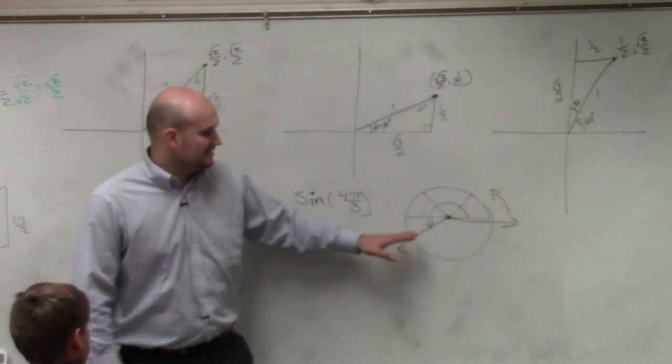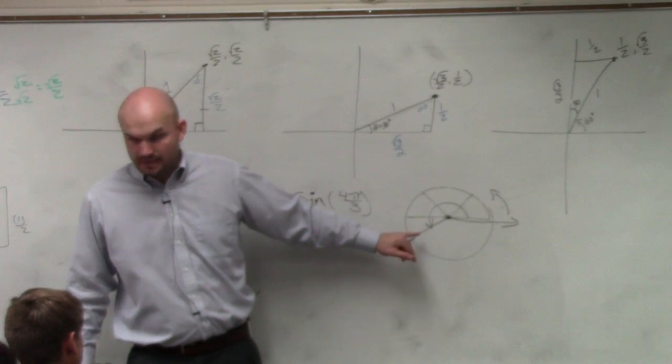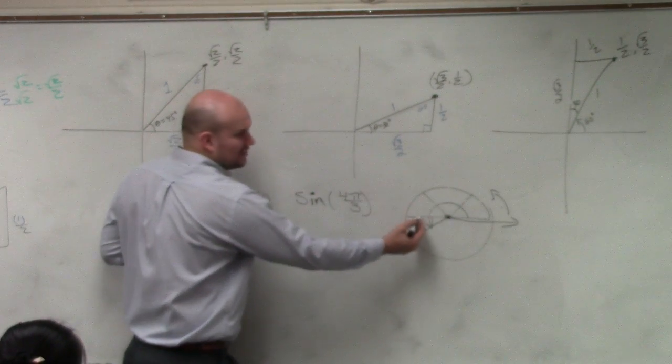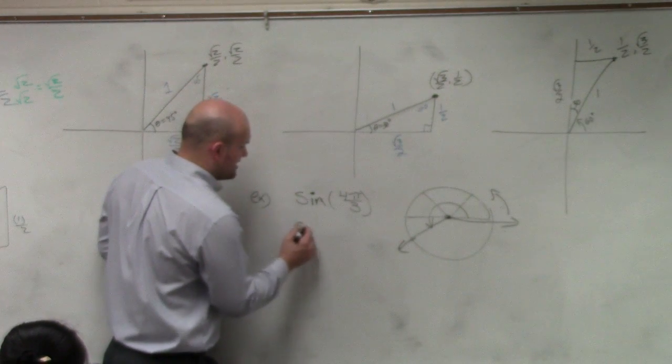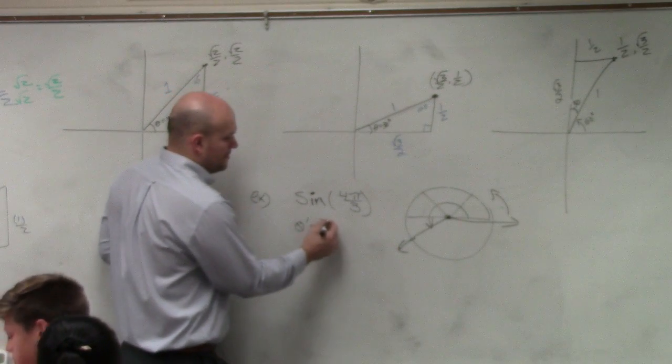Would everybody agree with me? That's a good measurement on my angle 4 thirds. Now, the next thing I ask you guys to do is find the reference angle. So if halfway around the circle is 3 pi over 3, and I go to 4 pi over 3, I could say my theta prime is, or my reference angle is, pi over 3.